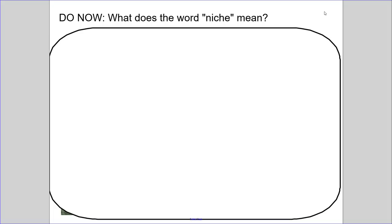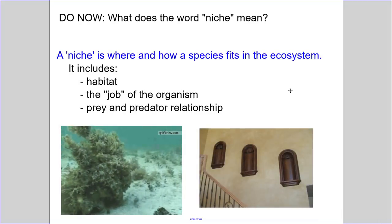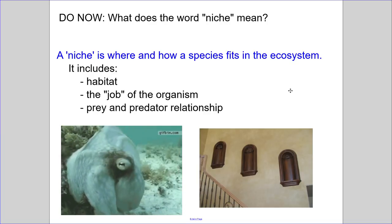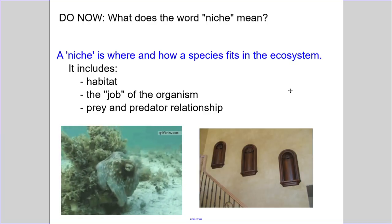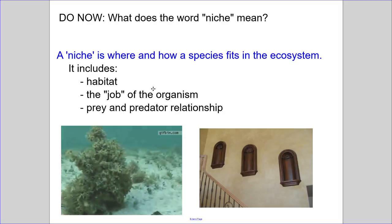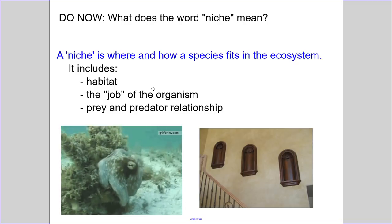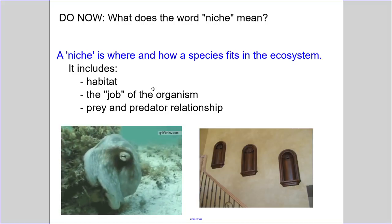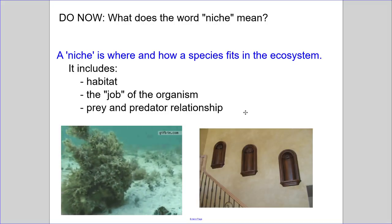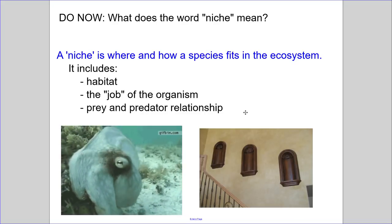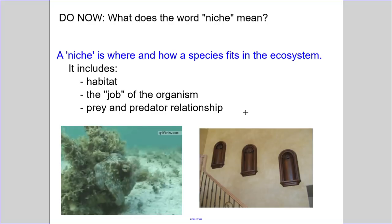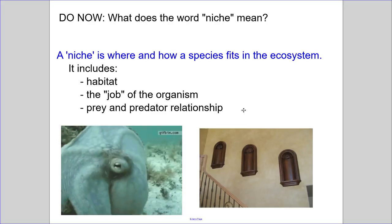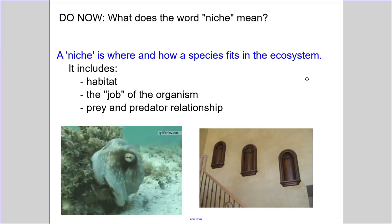Before we do anything, I wanted to define a very important word: niche, or niche — I think you can pronounce it both ways. A niche is where and how a species fits into its ecosystem. It's basically how it interacts with all the things that surround it. It includes but is not limited to the habitat it lives in, what that organism does in the environment — is it a decomposer, a photosynthesizer, a predator? It also takes into account prey and predator relationships among other organisms in that ecosystem.